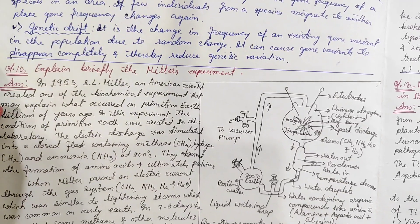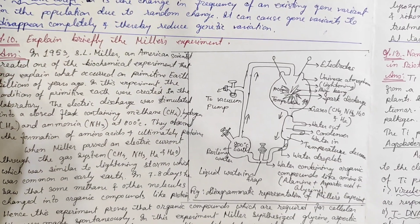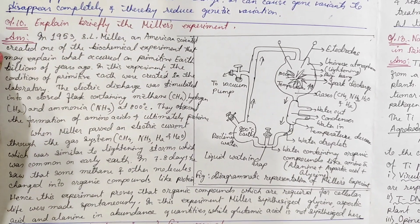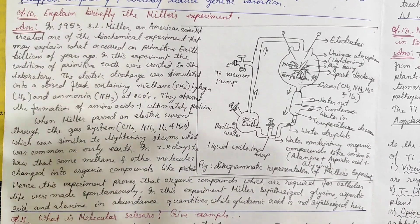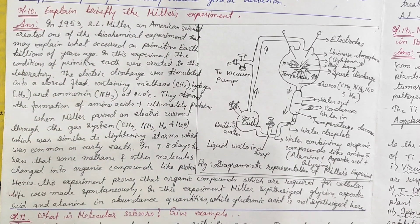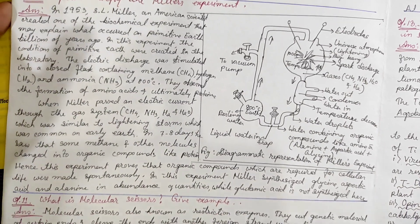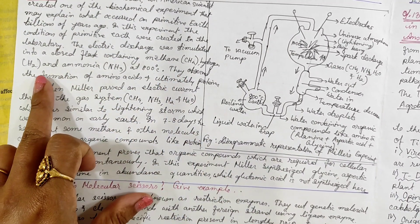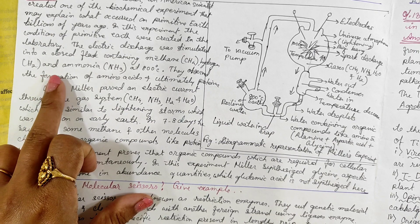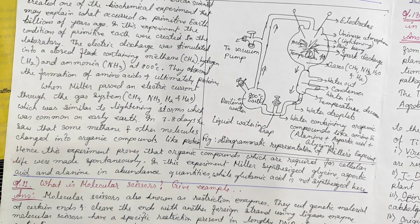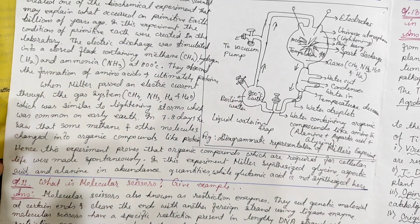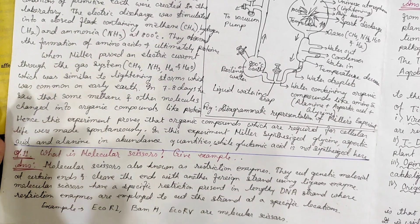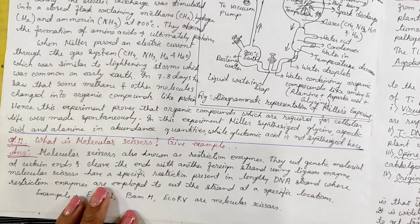Miller's experiment involves a diagram with the following components: methane, water, hydrogen, and ammonium.